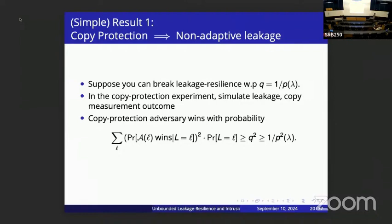The reduction works as follows: suppose you can break the leakage resilience experiment with some inverse-polynomial probability. In the copy protection experiment, you simulate the classical leakage outcome and copy it to give to Bob and Charlie. By a Jensen's inequality argument, even though we have two adversaries trying to win simultaneously, the probability is still inverse-polynomial, so this does break unpredictable copy protection.